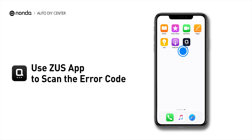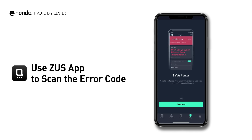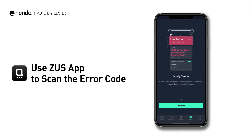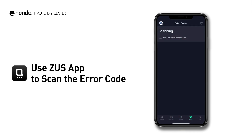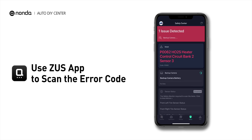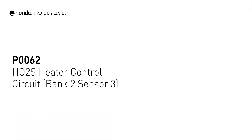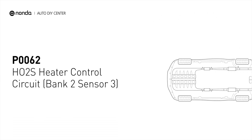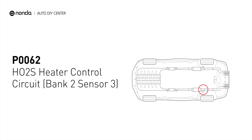Use the Zeus app to scan your vehicle and see the error code P0062. This code may be triggered when your vehicle's control module detects a fault in the heater circuit and oxygen sensor bank 2, sensor 3.